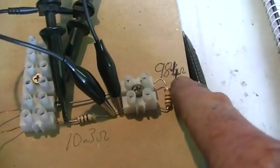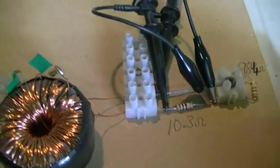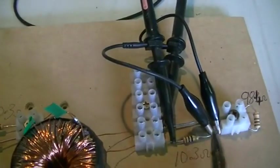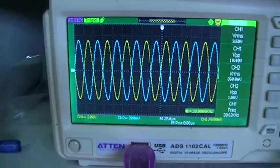And the red channel there is reading the voltage across our load, the 98.4 ohm resistor. Because we have it hooked up like this, it will of course be 180 degrees out of phase.